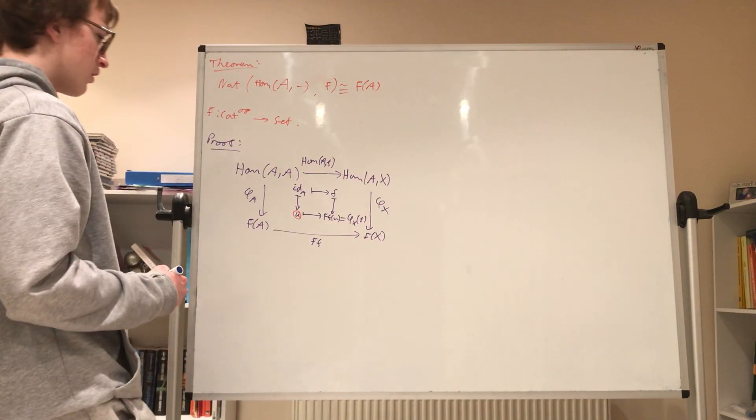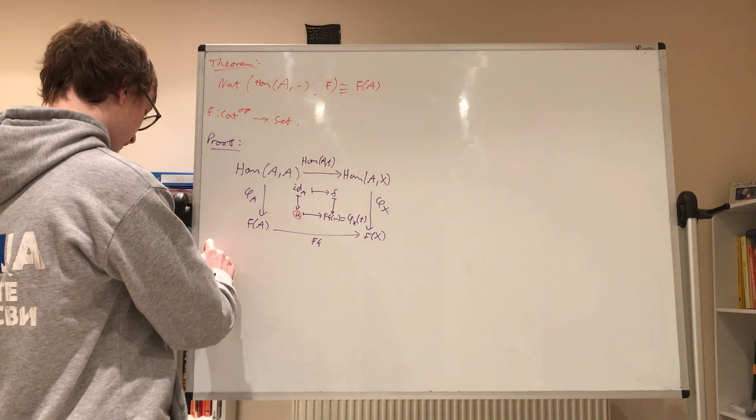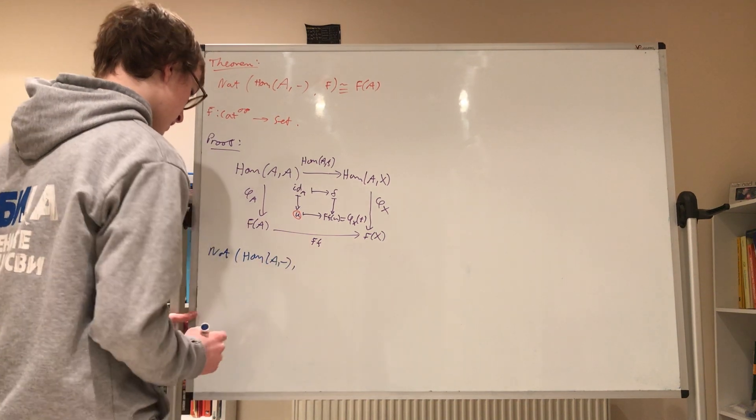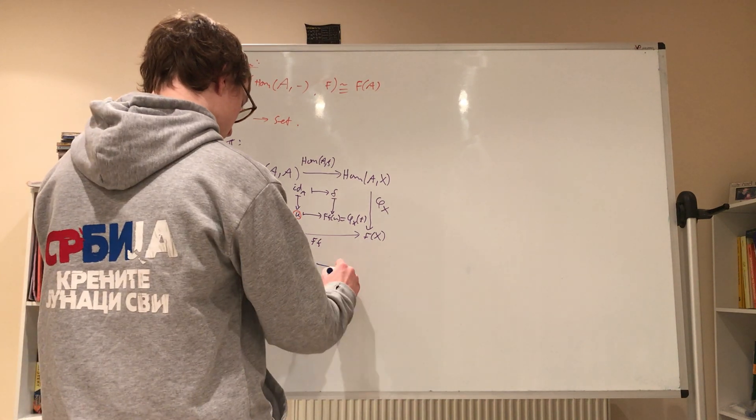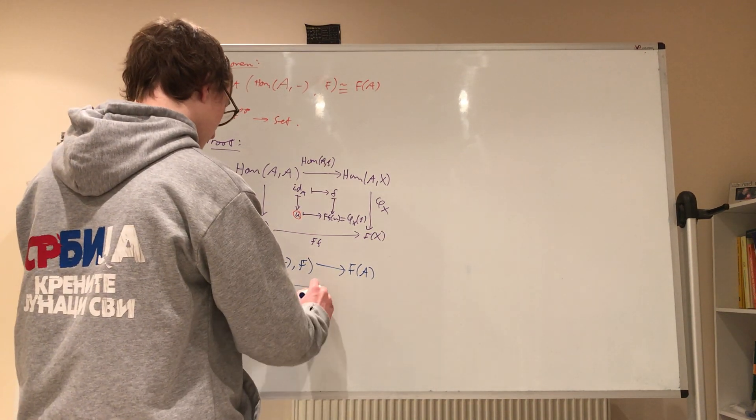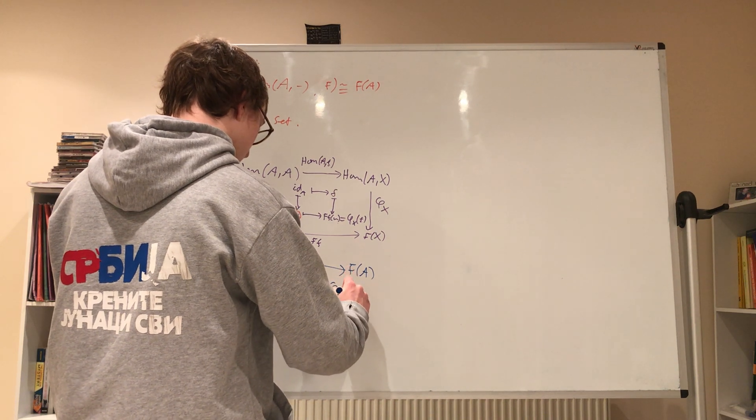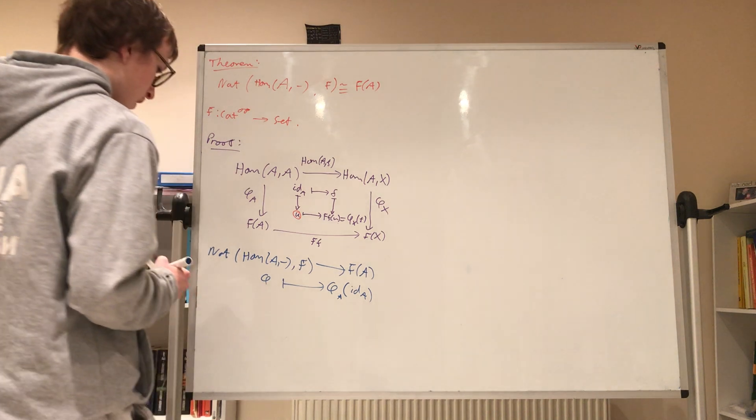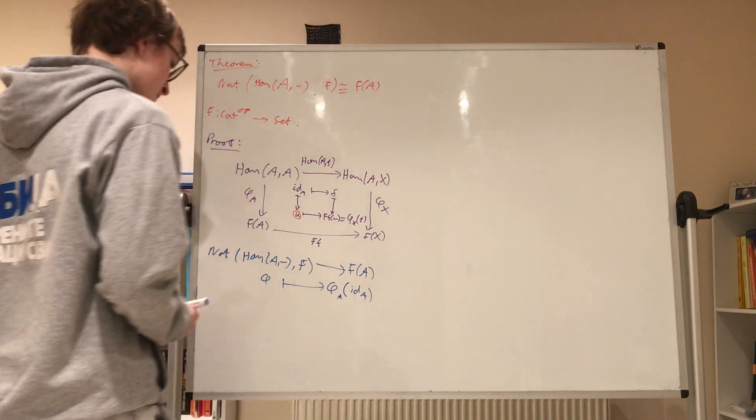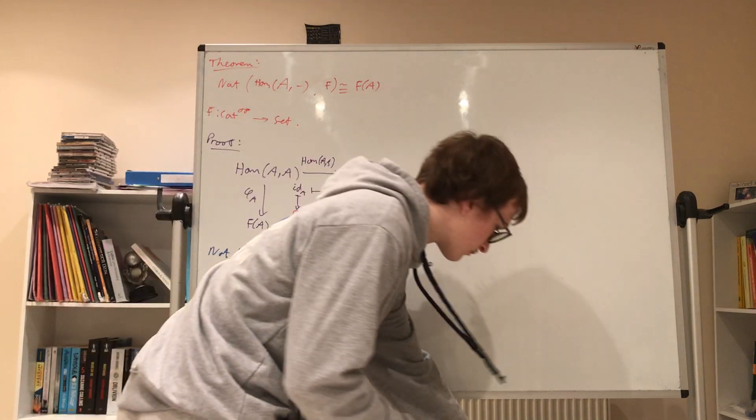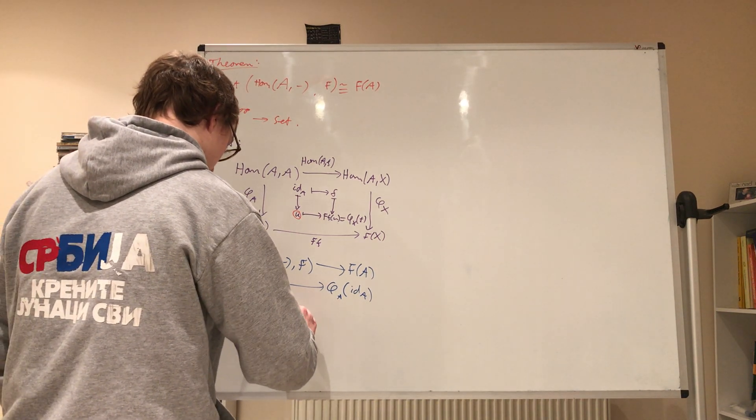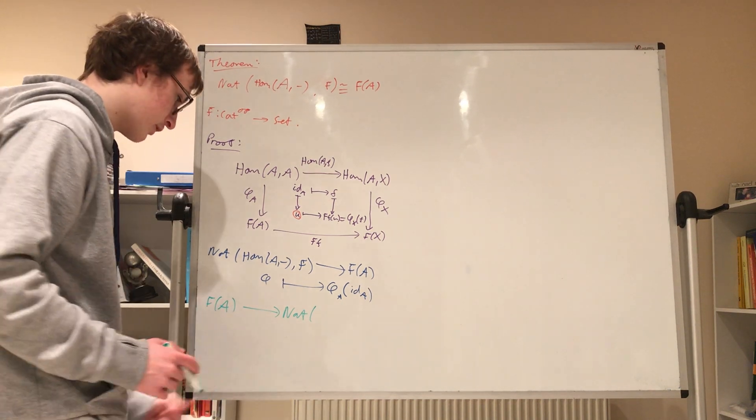So, what we're going to do is, one way, we're going to send a natural transformation between Hom_A(-) and F, we're going to send it to F of A. How are we going to do this? Well, we're going to send our natural transformation phi, it's going to be sent to phi_A of the identity on A. Now, all we have to do is construct an inverse, and the inverse map, which we'll do it in green, which goes from F of A to the set of natural transformations, so it takes in an element and it outputs a natural transformation.